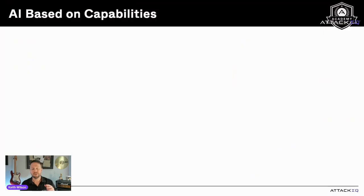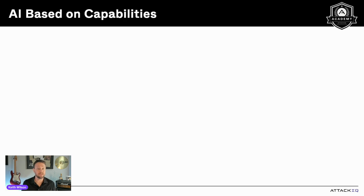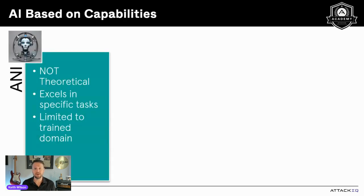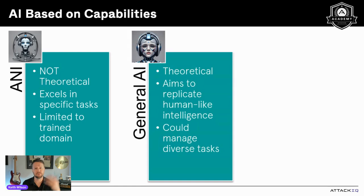Before we begin our discussion on AI security, I think it's important that we talk about the types of AI that exist in practice and in theory. We can discuss AI based on capabilities and types, and those are overlapping. There are three types of AI based on capabilities. The first is called Artificial Narrow Intelligence, or ANI — it's specialized, excels in specific tasks such as diagnosing diseases or predicting stock market trends, and it's limited to its trained domain. It can't generalize its knowledge to other areas.